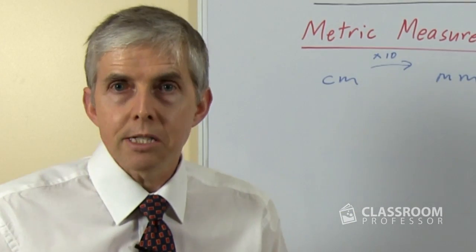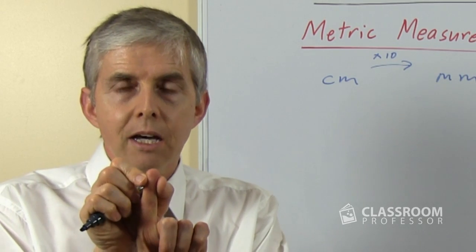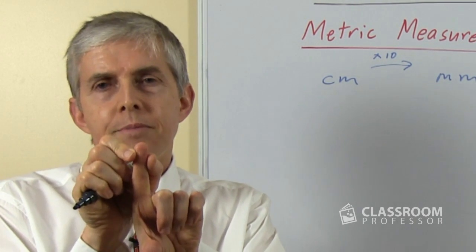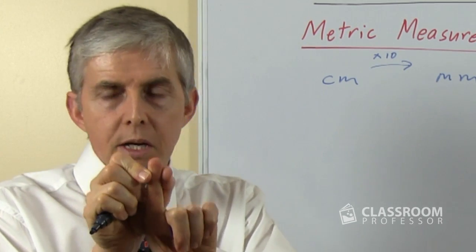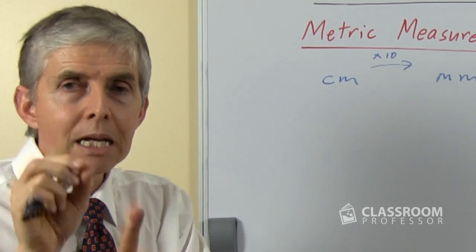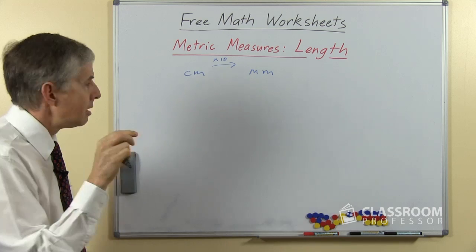A centimeter is about the width of your finger, or maybe a little bit bigger than your finger, depending on how big your fingers are, but that's about the size. A millimeter is a tenth of that.